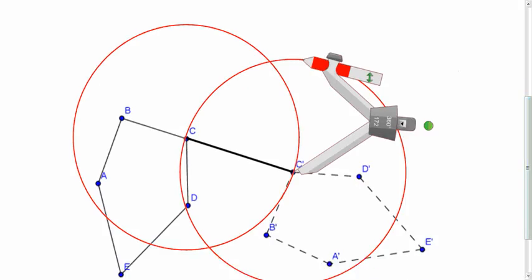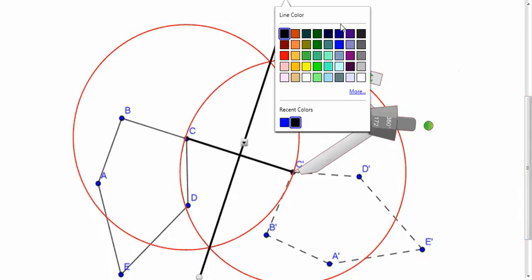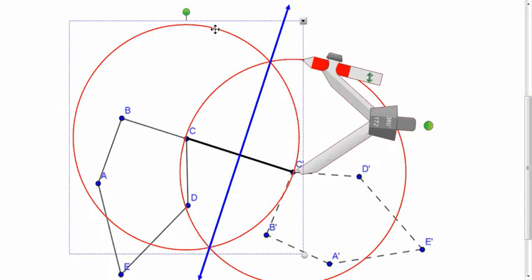And so if we connect these two points we have a perpendicular bisector of C C prime and the center rotation is going to be the intersection of this with another one of the perpendicular bisectors. So I'm going to delete these circles so it's easier to see.